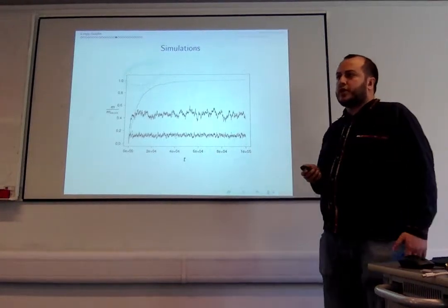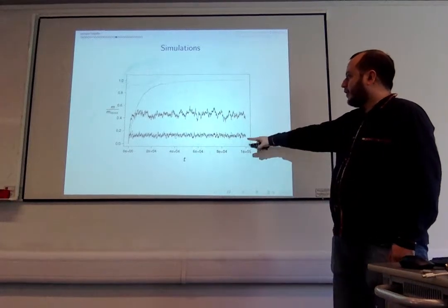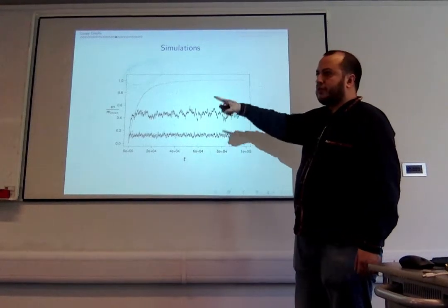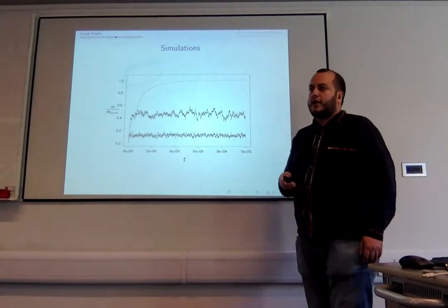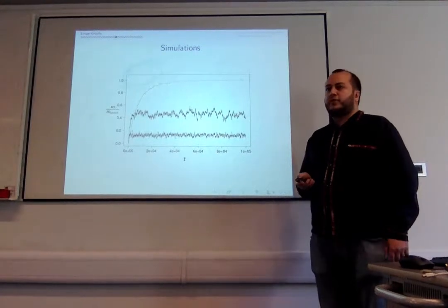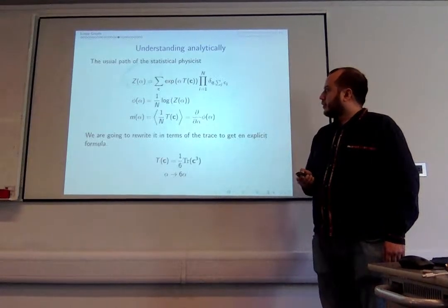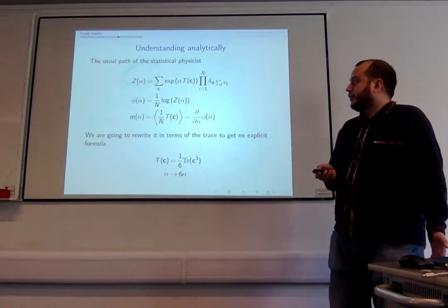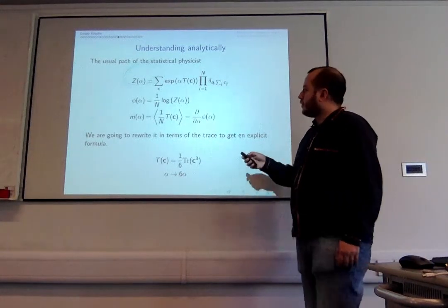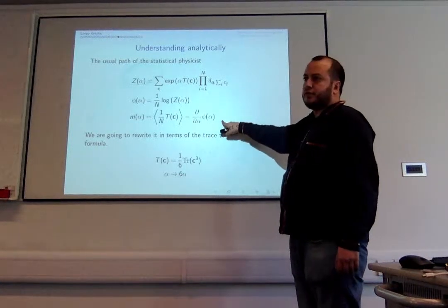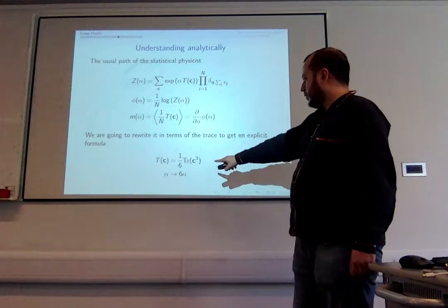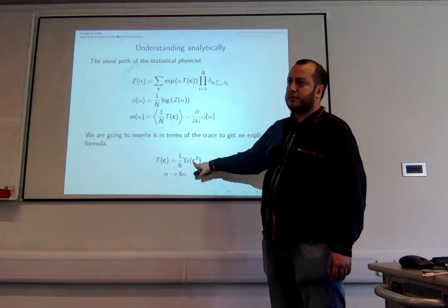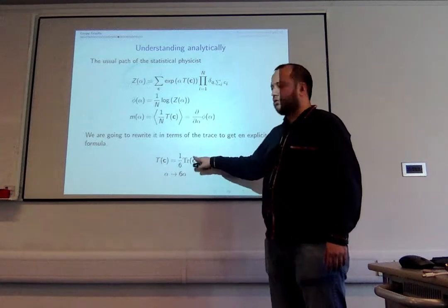Starting the simulation, for a small value of alpha you see the number of triangles increase; for a larger alpha it goes straight to the maximum. To understand this analytically, as a statistical physicist you want to calculate the partition function and take the derivative. The number of triangles in a graph is also one sixth of the trace of the third power of the adjacency matrix, so I'll use that language.